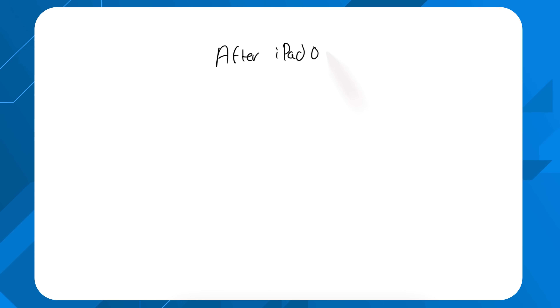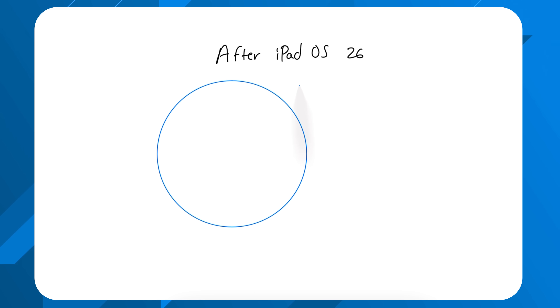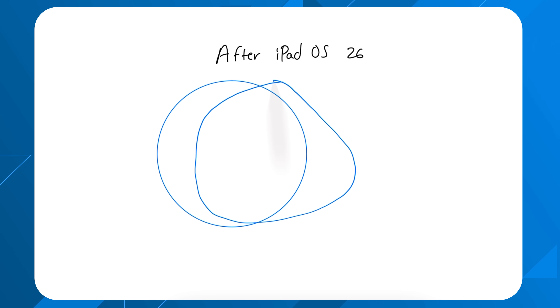Another small thing missing from iPadOS that macOS has is a font management system in the settings menu. On iPad you still need to download a separate application to import custom fonts, whereas on the Mac it's super simple. That said, the Venn diagram now has about 95% overlap in the middle, with macOS retaining some exclusive capabilities — but the iPad is still an iPad and all the things that made it great are still there.